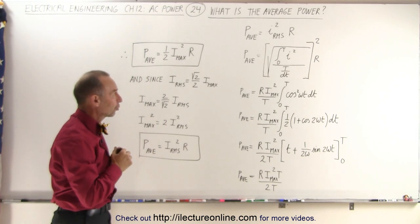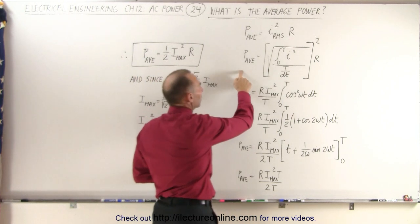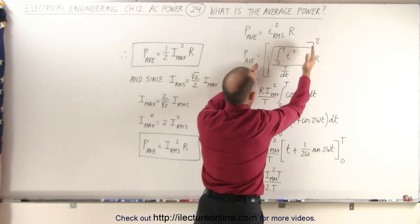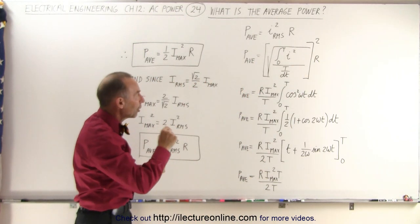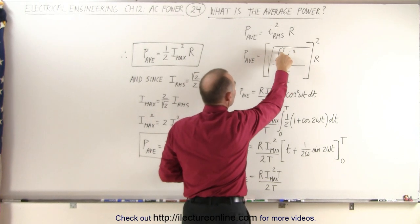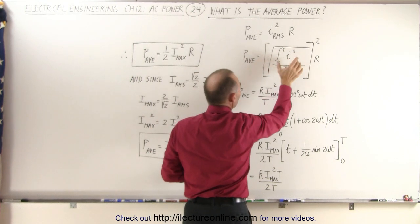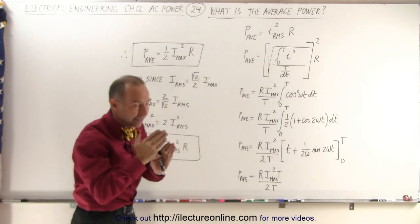So then the average power can be defined as this quantity squared. Notice what's inside the brackets is the way we calculate the RMS current. We take the square root of the integral from zero to the end of the period of the current squared divided by the number of samples, which is the total period divided by the DTs.